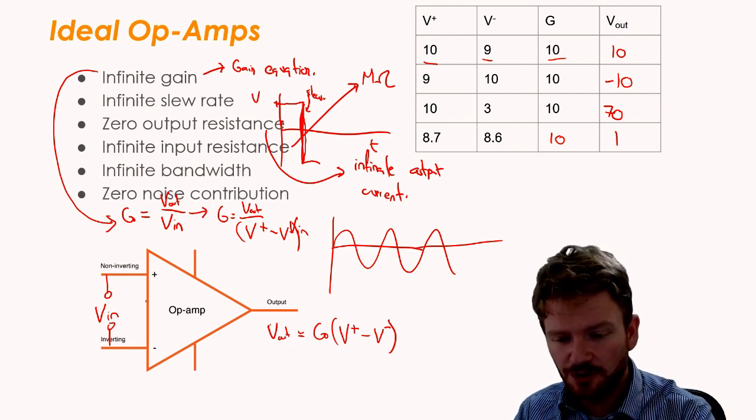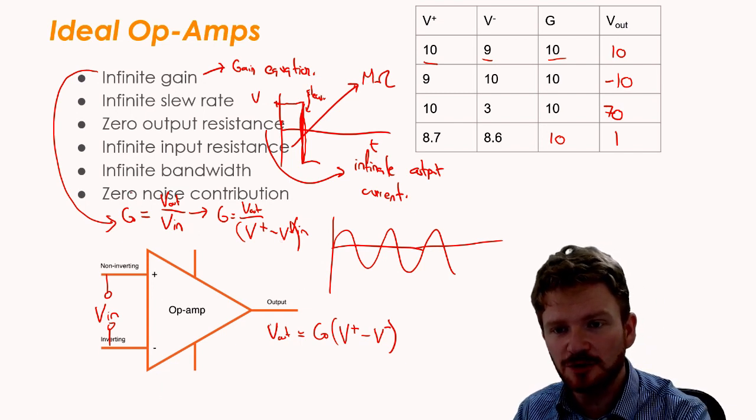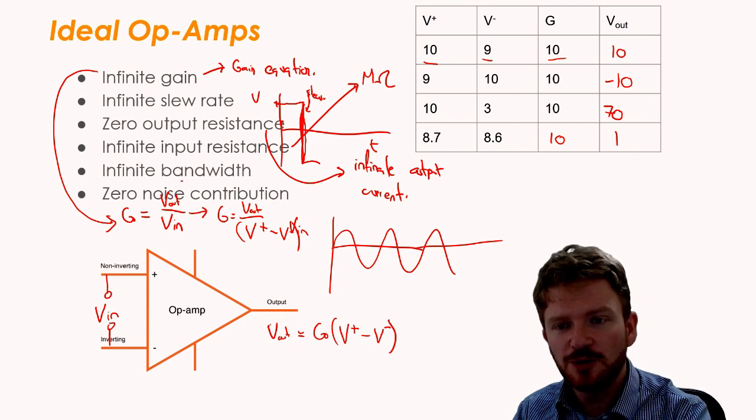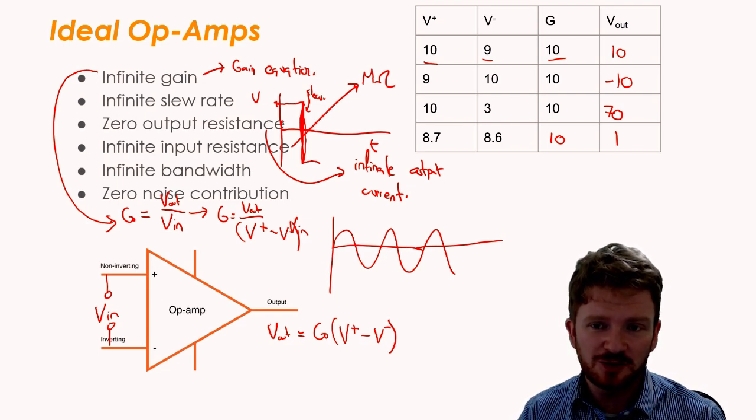There is one more thing that we need to understand about our theory of this, and that is that there's zero noise contribution. When you do communication, you'll look at a little bit of noise, but it's basically the idea that we don't add any extra signal into this, we just magnify a signal, we never add anything to it.